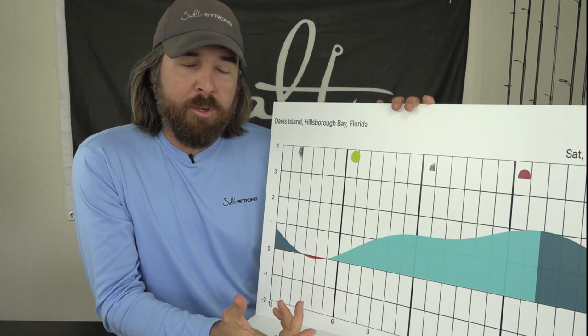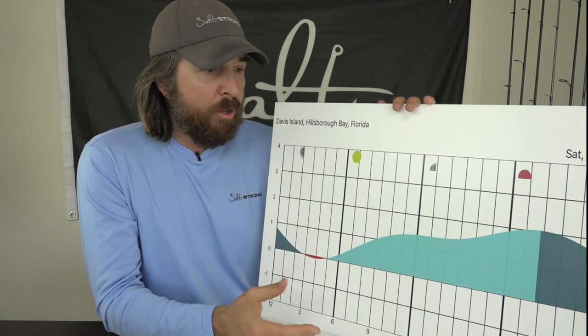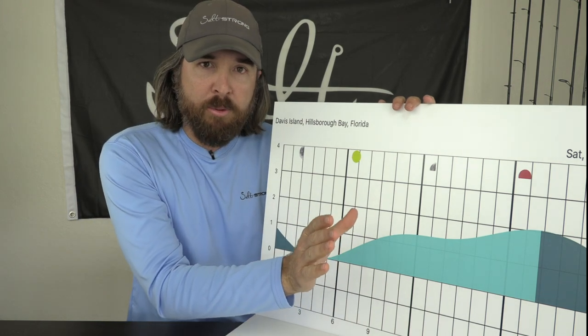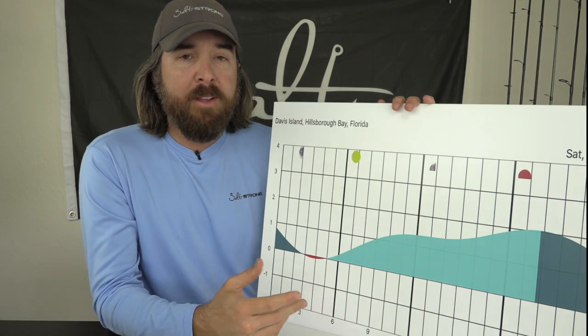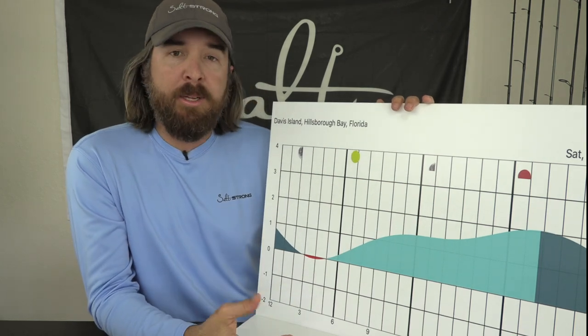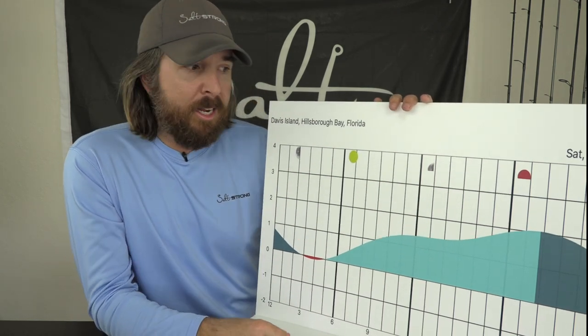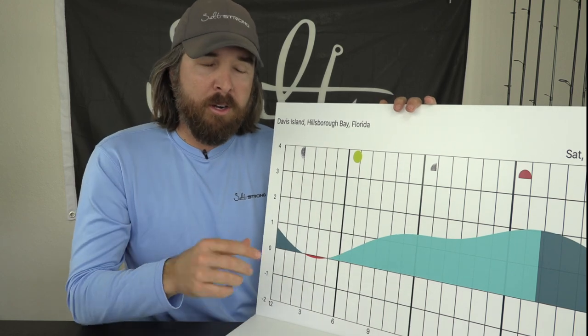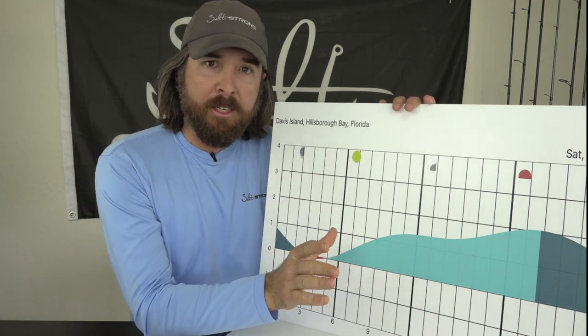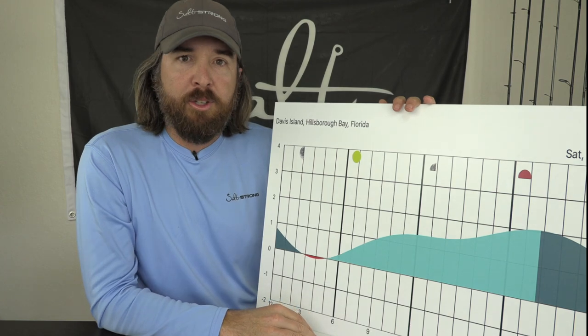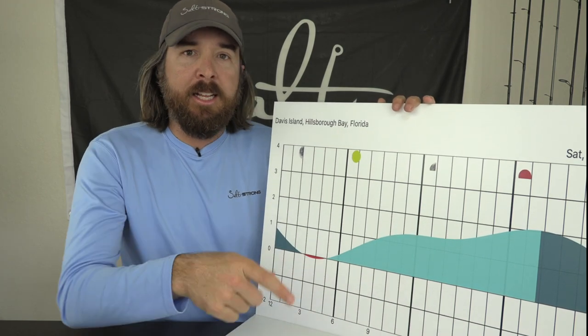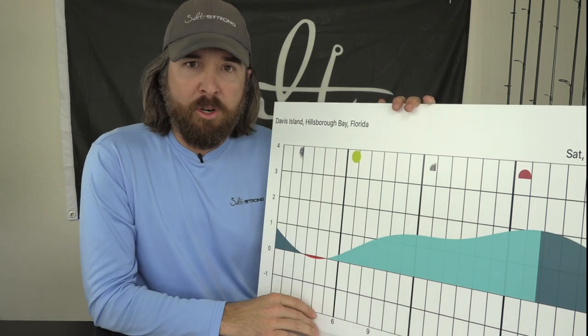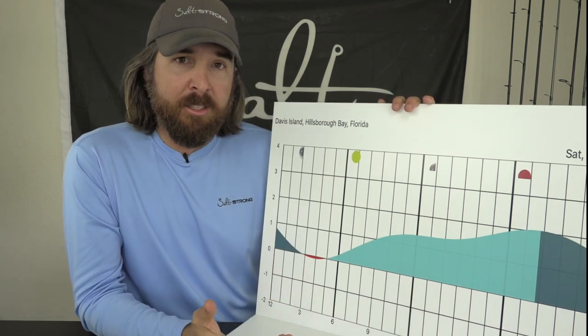Just look for any sort of constriction points where there's like wind blowing through two little islands. That's going to be a constriction zone where that water is going to push through and although it won't be strong it's going to be at least better than nothing. Even just the churning of the water from fishing the windy sides, like if you're in a circular bay, fish the windy sides during slack period because at least that wave activity is turning up the water and that's just going to increase the odds.